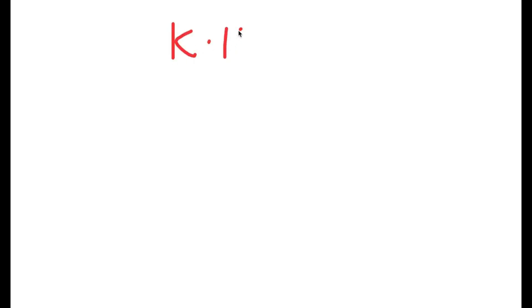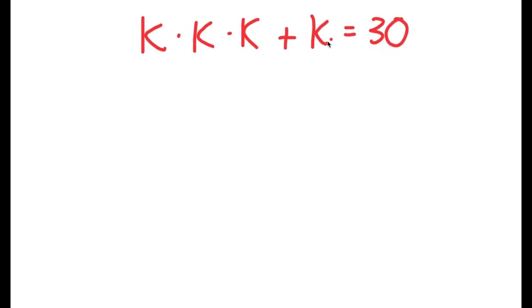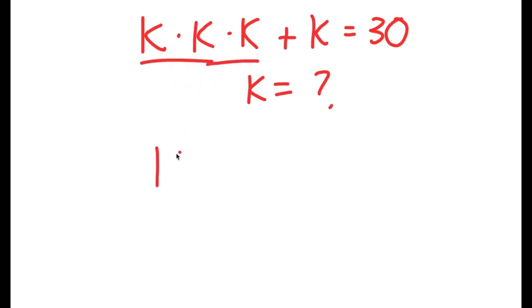In this video, I'm going to solve the equation k times k times k plus k is equal to 30. I want to find the value of k. To start off, k times k times k is the same thing as k to the power of 3. So k to the power of 3 plus k is equal to 30.